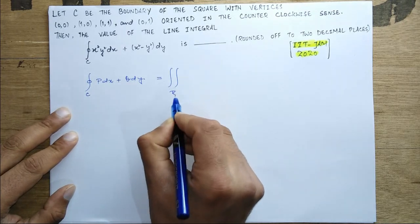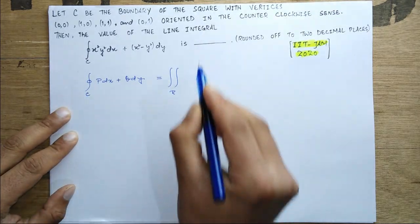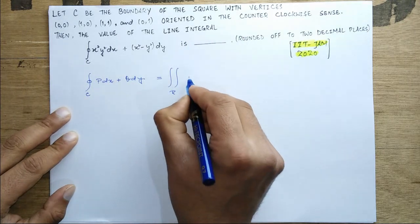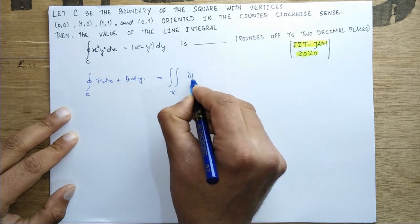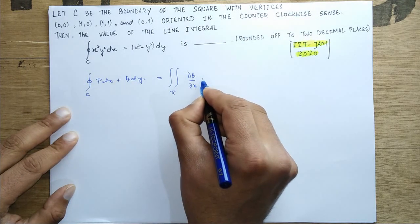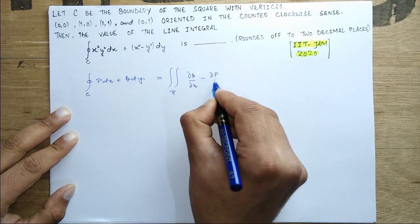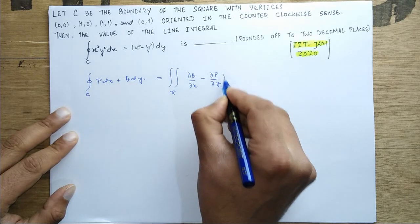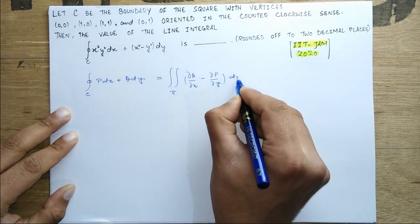The double integral over the region which C encloses. It is ∂q/∂x minus ∂p/∂y and then dx dy.